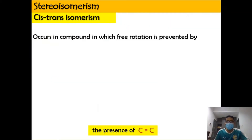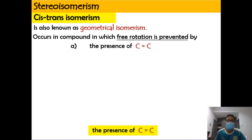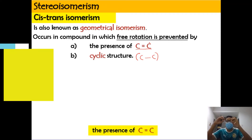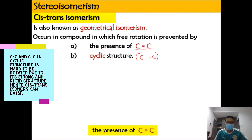Stereoisomers are compounds with atoms connected in the same order but differing in arrangement in space. Today we focus on cis-trans isomers, also known as geometrical isomers. These occur because free rotation is prevented by either of two conditions: the presence of a carbon-carbon double bond, or a cyclic structure, which usually involves a carbon-carbon single bond.